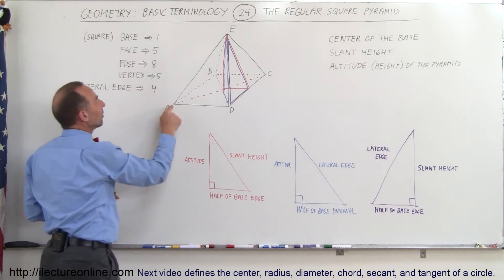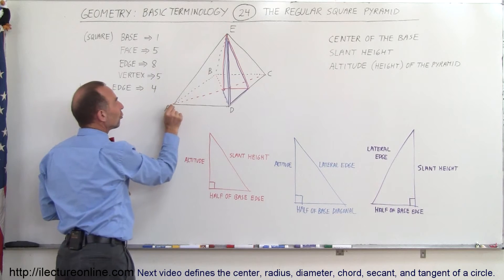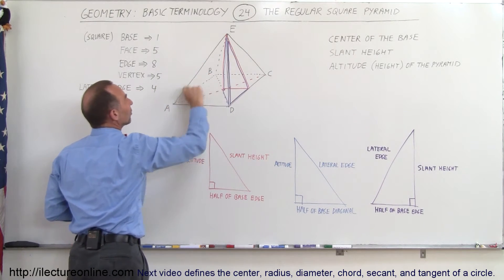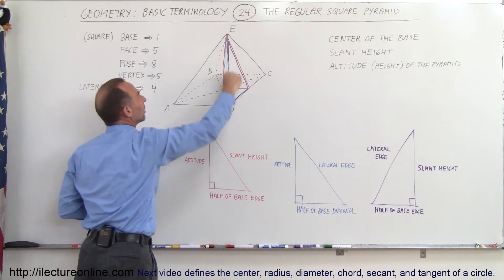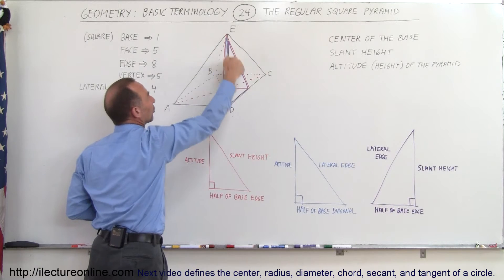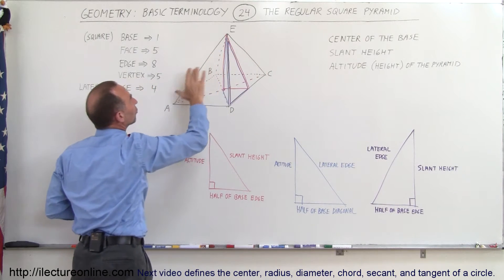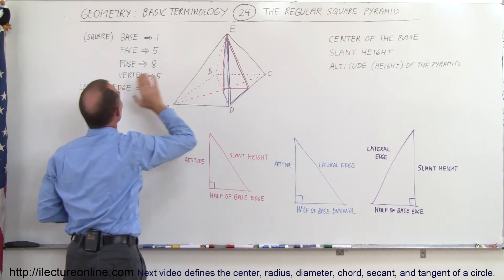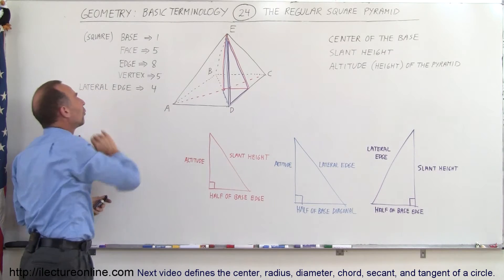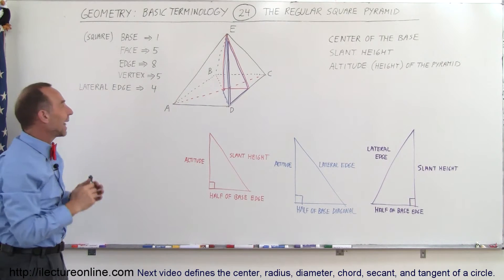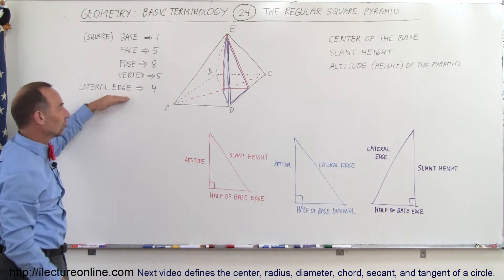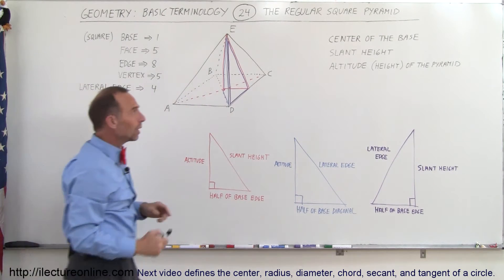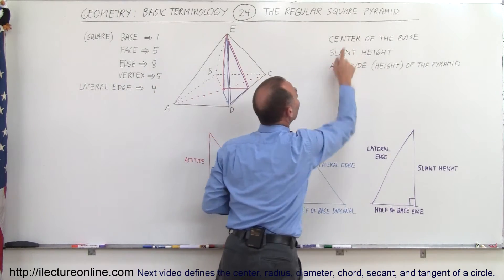The lateral edge is the edge or rib which separates the slanted sides. There's one rib, another one, a third one in the back, and a fourth one — so a total of four ribs, or what they call lateral edges.